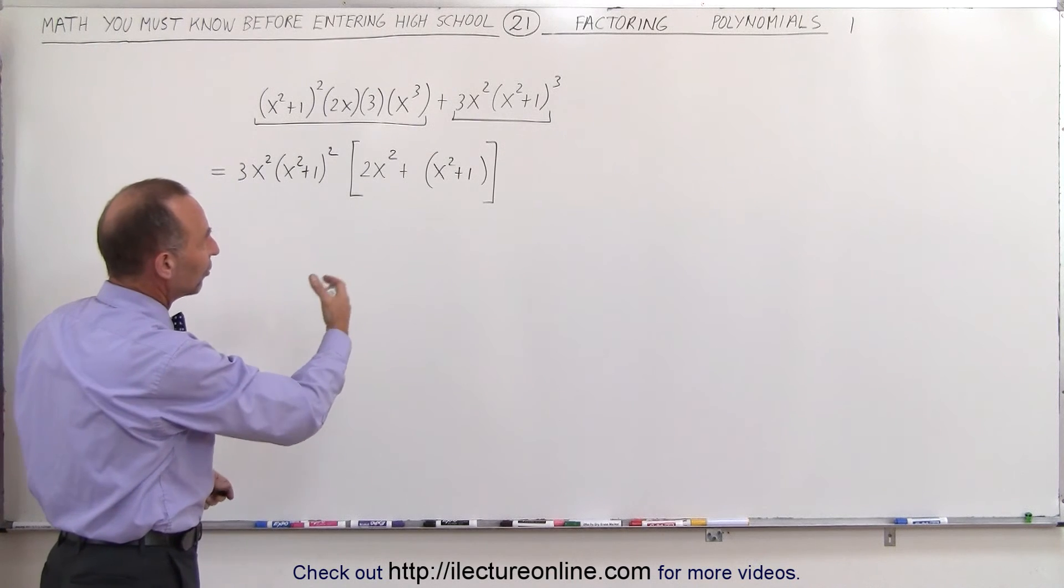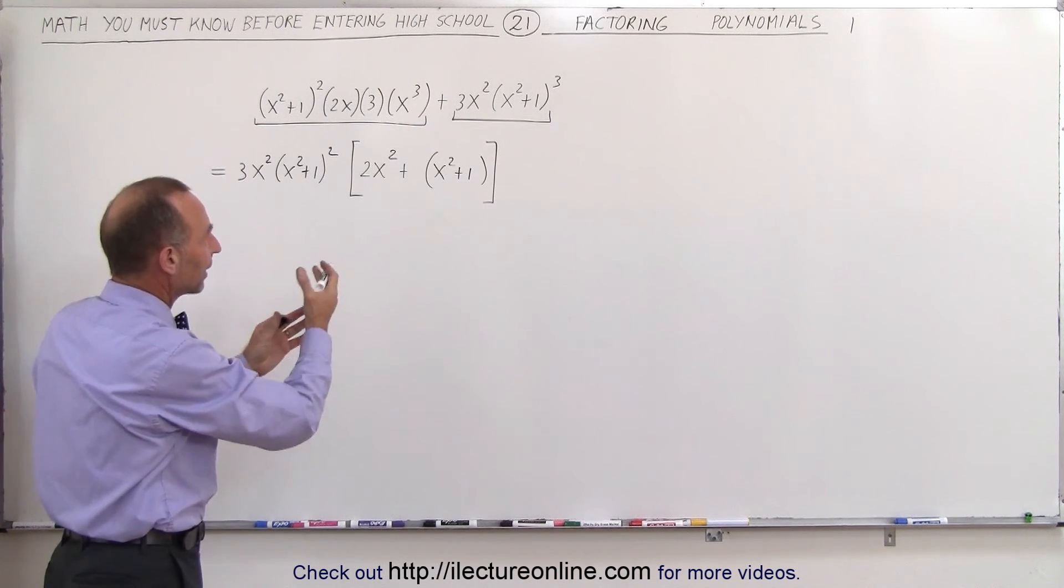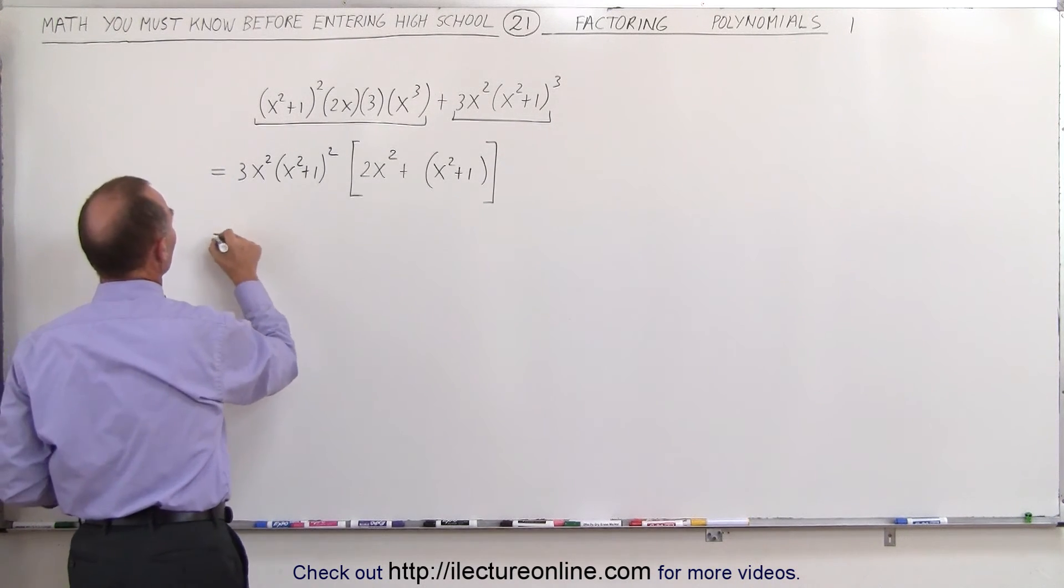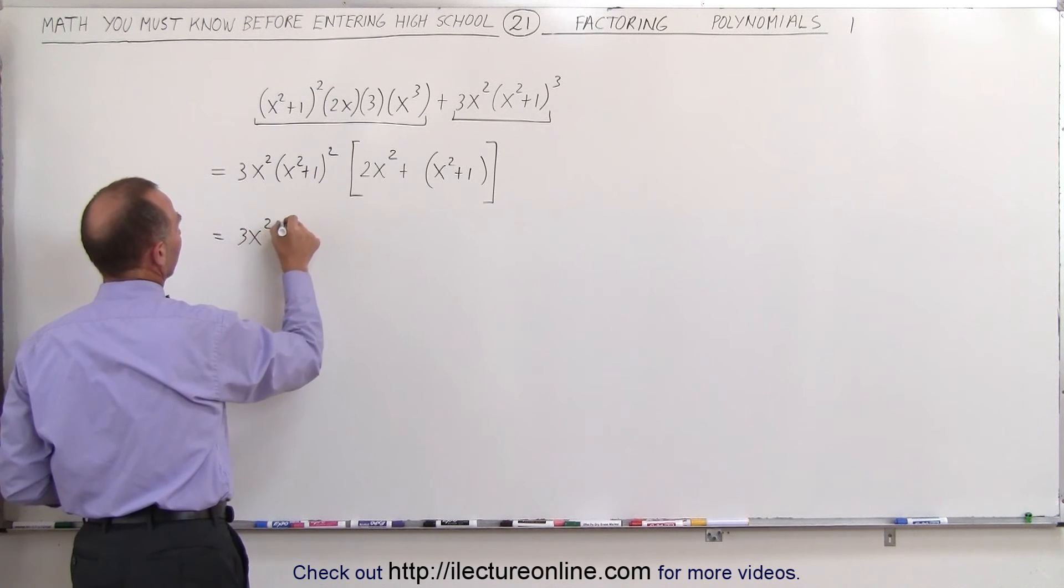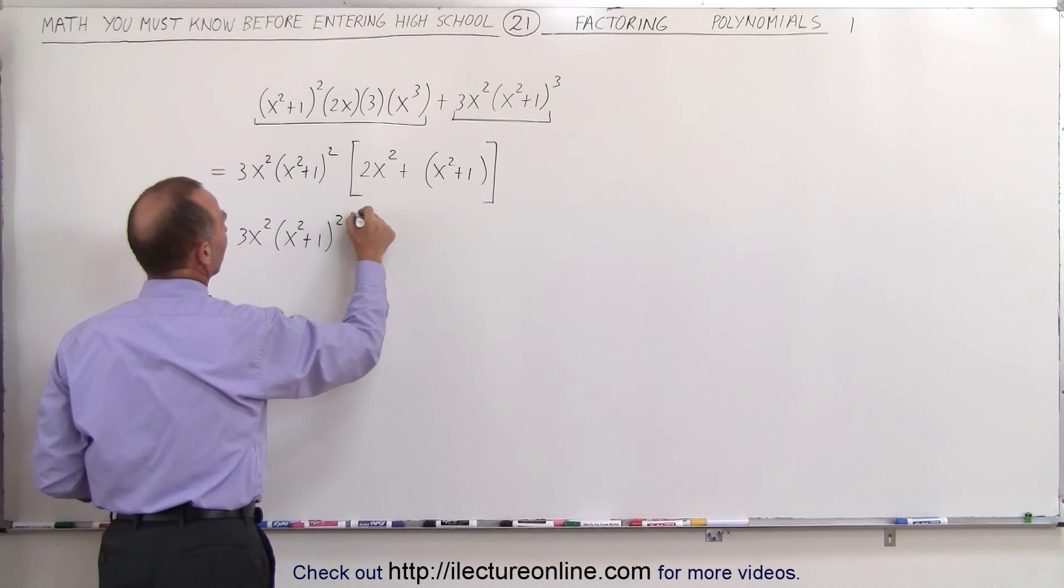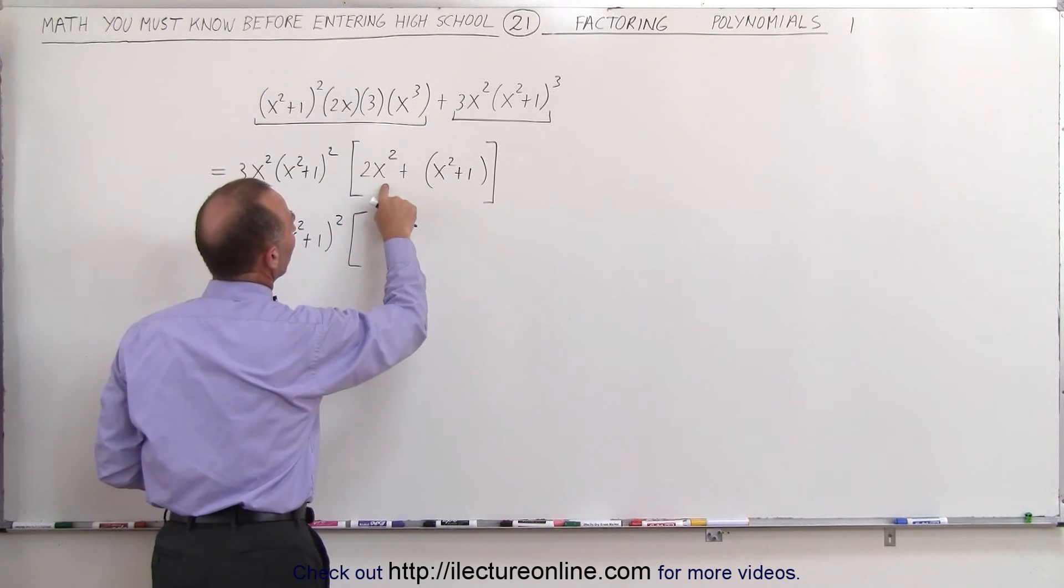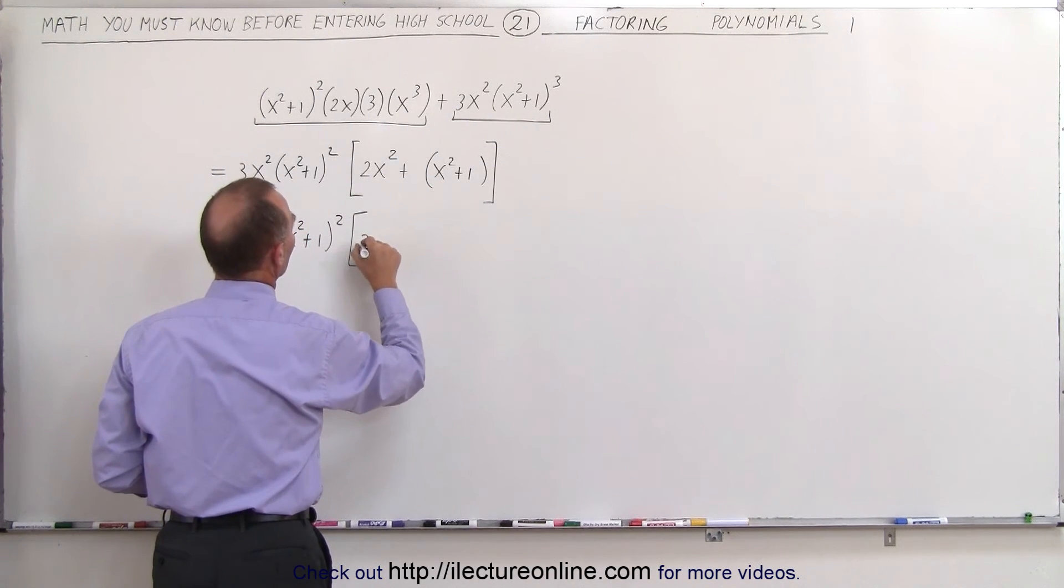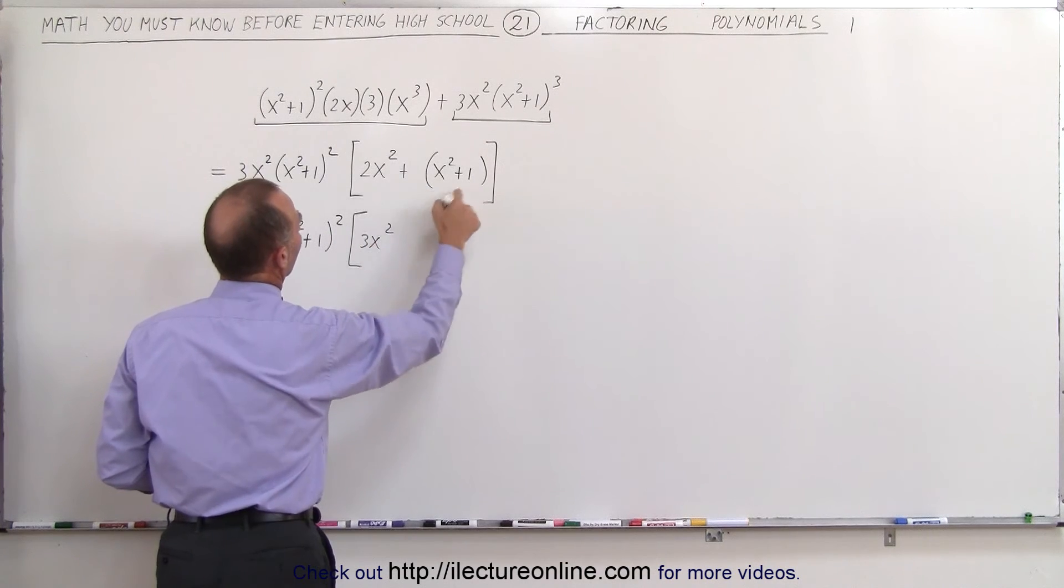Now of course I don't need the parentheses so I can get rid of parentheses and combine like terms. So this now becomes 3x squared times x squared plus 1 quantity squared. And here in the brackets I have a 2x squared plus an x squared that gives us a 3x squared plus 1.